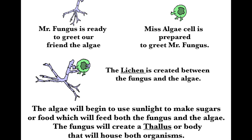Then we have a type of symbiosis called lichen. This is where fungus and algae work together — it is a type of mutualism. Algae will use sunlight to make food for the fungi and for itself, while fungi will protect it by creating a thallus, or a protective covering. So lichen is an example of mutualism.